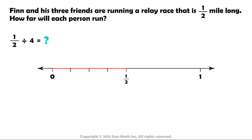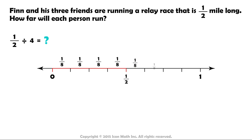To find out, we will split the remaining one half into the same number of parts. Now that the entire line is made up of equal parts, we can see that eight parts make a whole. And each one of these eight parts represents one-eighth. Therefore, Finn and his friends will each run one-eighth of a mile.